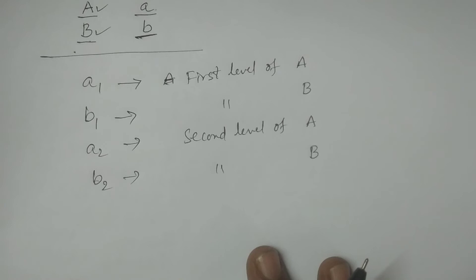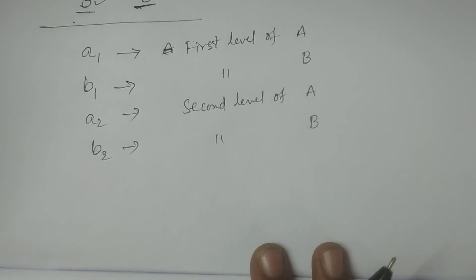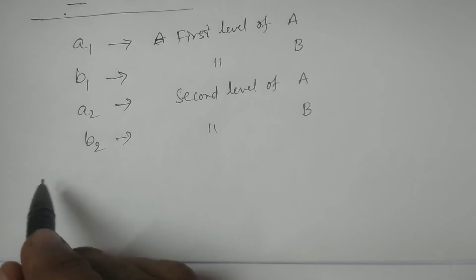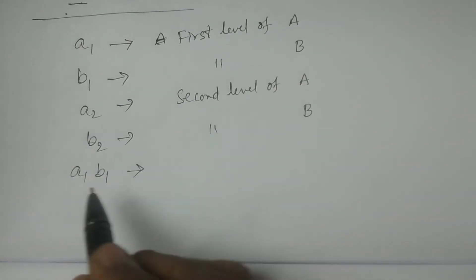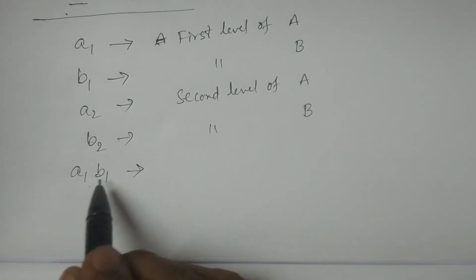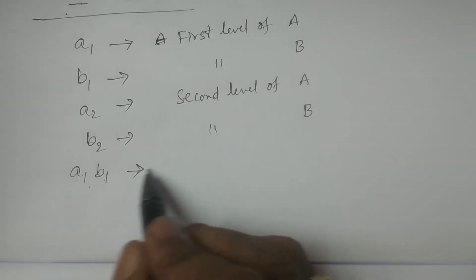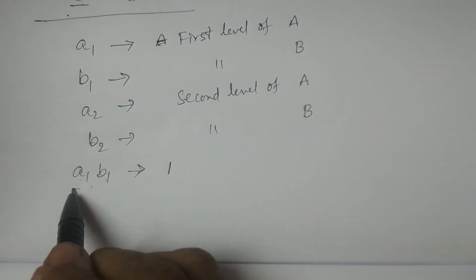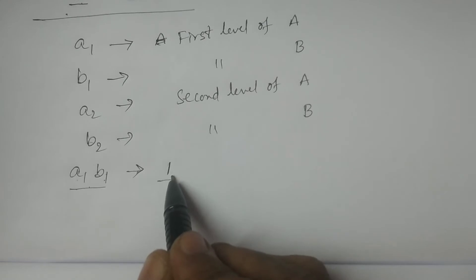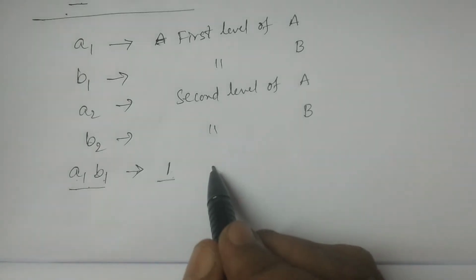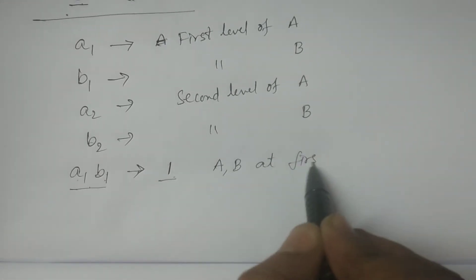Now consider the treatment combinations. In the 2 square factorial experiment, how many treatment combinations will be obtained for two factors at two levels? Consider A1, B1 — this indicates the first level of A and first level of B. This combination is generally indicated by 1. The symbol 1 has no A or B present, indicating both factors A and B are at first level.